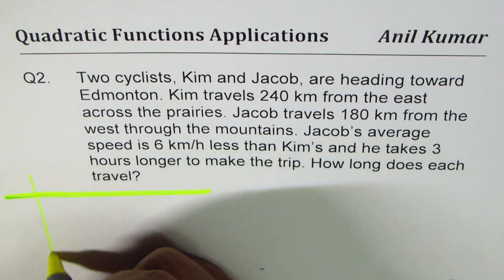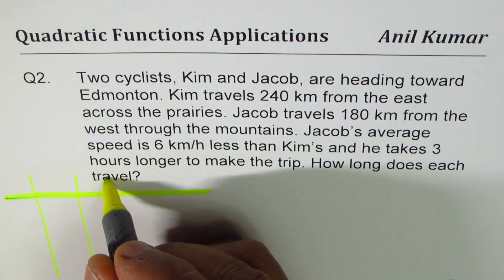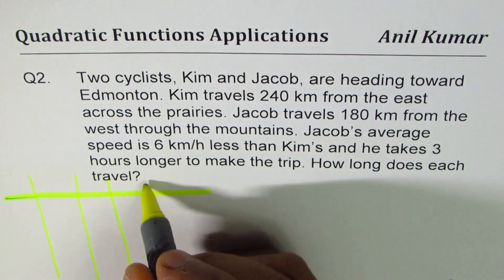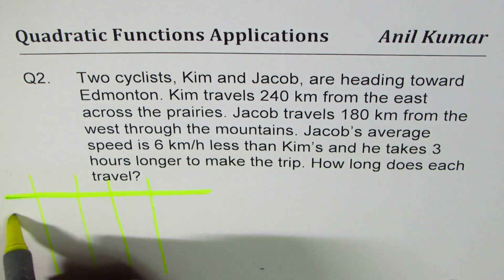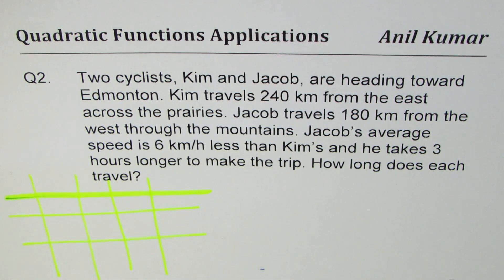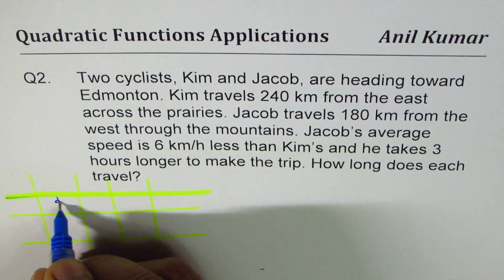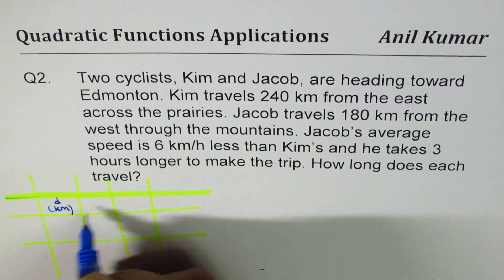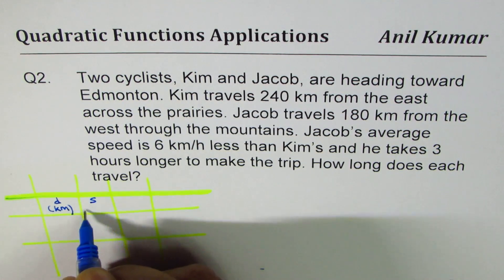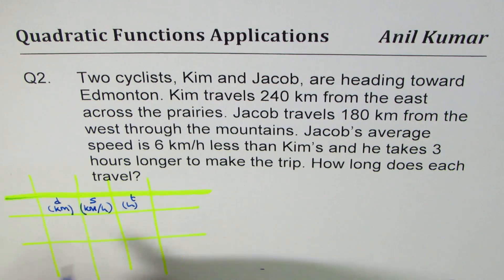So we have distance, speed, and time. Distance is in kilometers, speed is in kilometers per hour, and time is in hours.